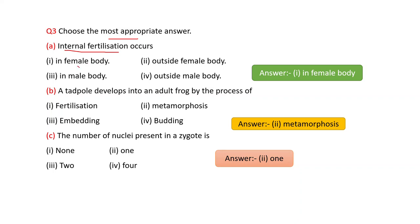Next question is a multiple choice question: Internal fertilization occurs — choices are: in the female body, outside the female body, in the male body, or outside the male body. The correct answer is: in the female body.